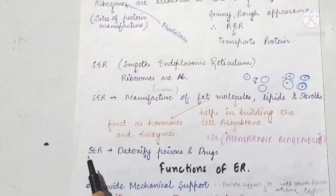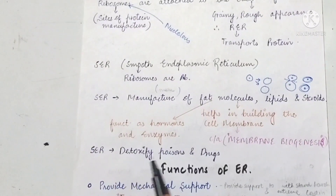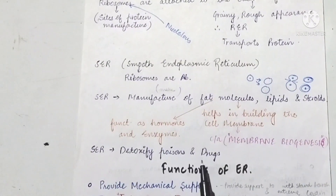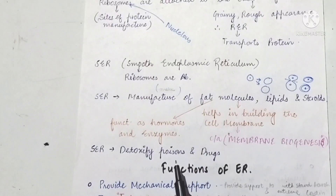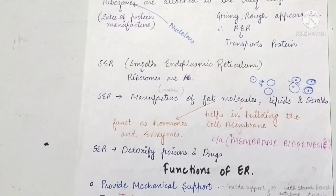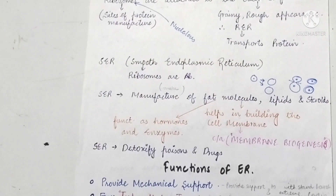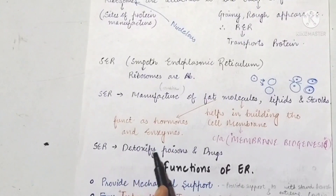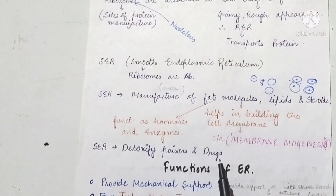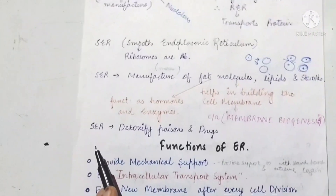Smooth endoplasmic reticulum also detoxifies poisons and drugs. It helps in detoxification in vertebrates — animals with a backbone — for example, humans and monkeys. The smooth endoplasmic reticulum helps to detoxify harmful substances.